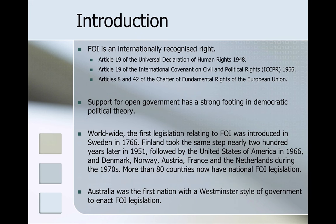The purpose of the Freedom of Information Act of 1982 was to open government activity to public scrutiny so as to enhance accountability and encourage citizen engagement with public administration — notions that are seen to be at the very foundations of a democratic society. Freedom of information is now an internationally recognised right, recognised in Article 19 of the Universal Declaration of Human Rights, Article 19 of the International Covenant on Civil and Political Rights, and Articles 8 and 42 of the Charter of Fundamental Rights of the European Union. The idea of open government has a strong footing in democratic political theory and has been a hallmark of a number of western democratic countries for some time.